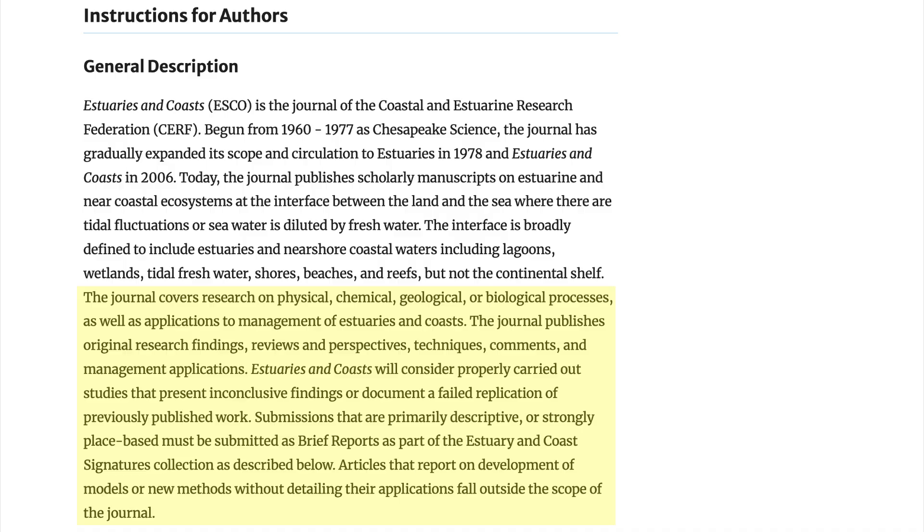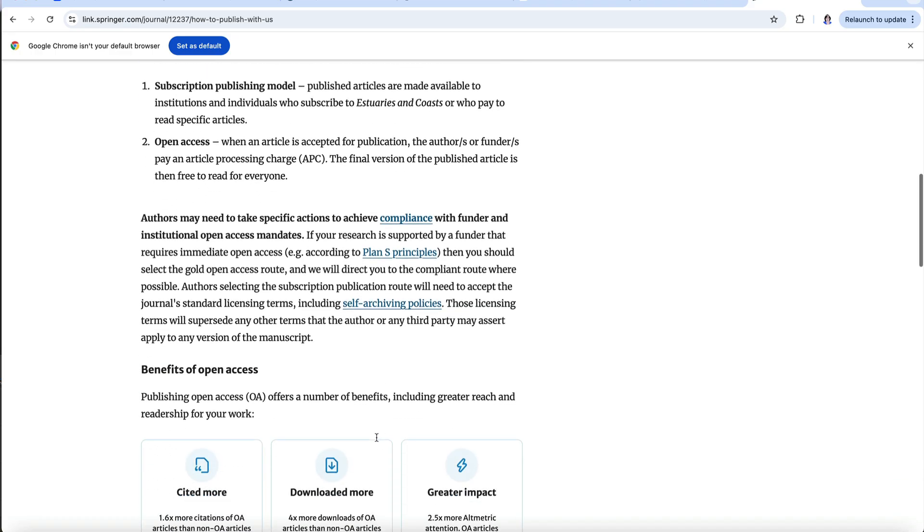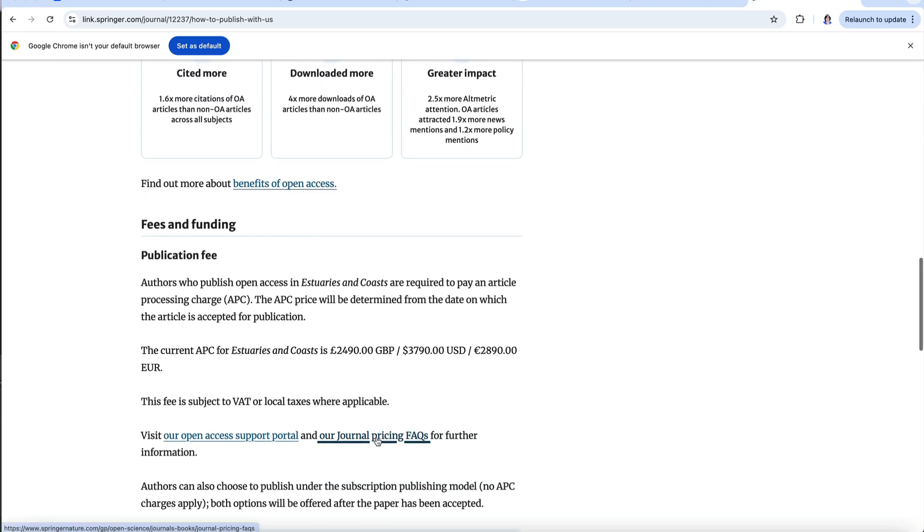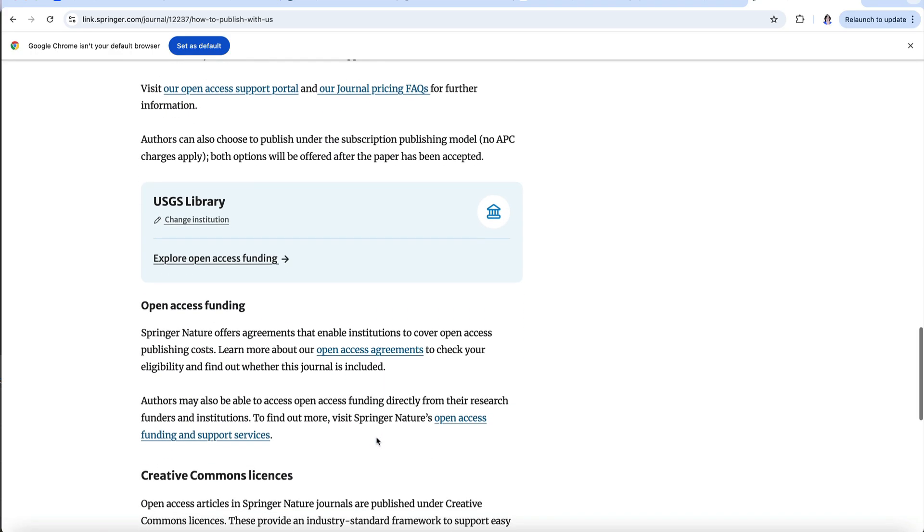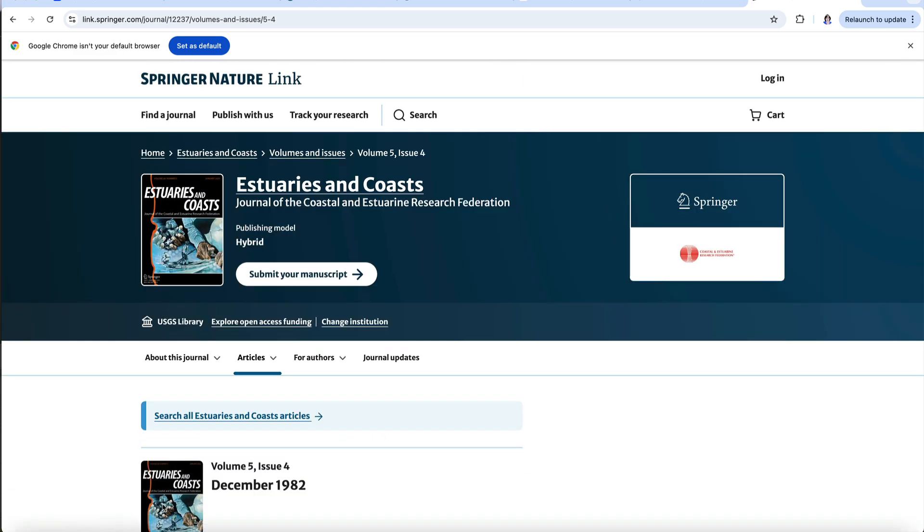Next, check out each journal's aims to see which ones best correlate with the topic of your research. Also, check the journal guidelines for length, page charges, rejection rate, impact factor, and other features to narrow down the list to meet your situation. In my case, Estuaries best fit the topic of my thesis and the quality and novelty of my research.